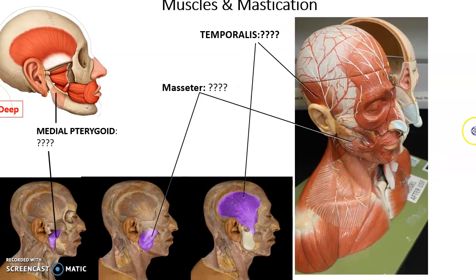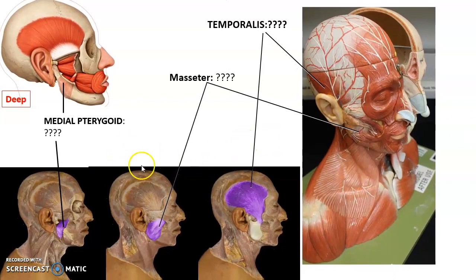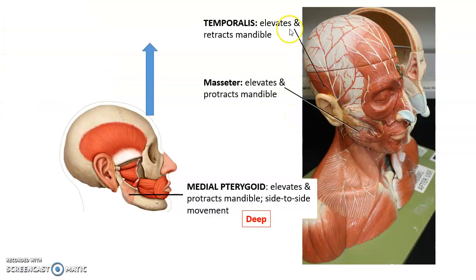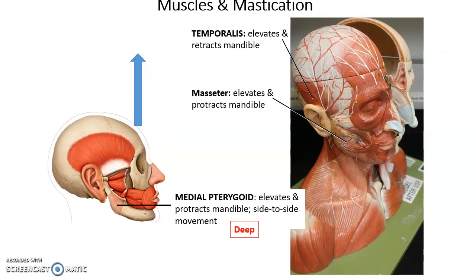Moving on to muscles related to mastication, or chewing: the temporalis muscle runs from the temporal bone down to the mandible; the masseter runs from the zygomatic bone down to the mandible; and the medial pterygoid connects deep under the mandible. All three elevate the mandible. Additionally, the temporalis helps retract the mandible; the masseter can protract it; and the medial pterygoid can protract the mandible and move it laterally from side to side.